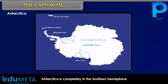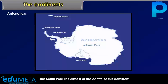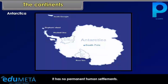Antarctica is completely in the Southern Hemisphere. It is a continent larger than Europe and Australia put together. The South Pole lies almost at the center of this continent. Hence, the continent is permanently covered with thick ice sheets and has no permanent human settlements.